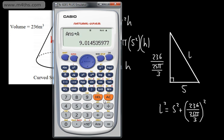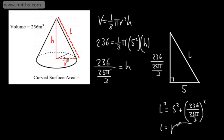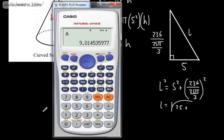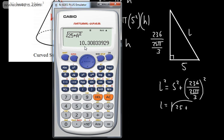Store the result as A. So if you did another calculation and then wanted that answer again, you would simply press recall A and it would bring it back. So l is going to be the square root of 5 squared, which is 25, plus this stored value squared. And that gives us 10.30.